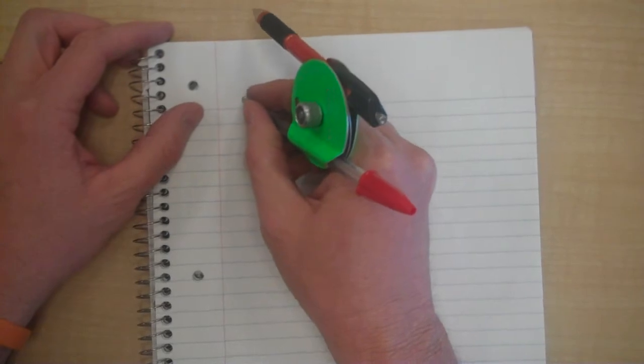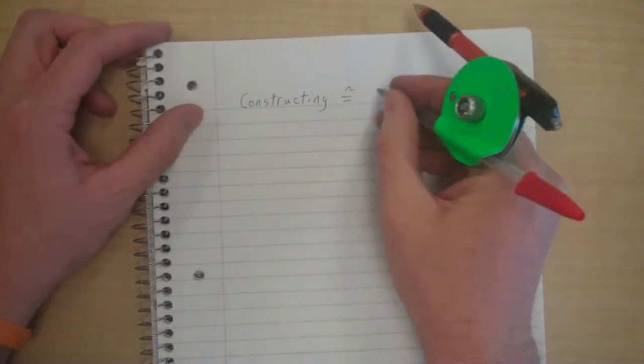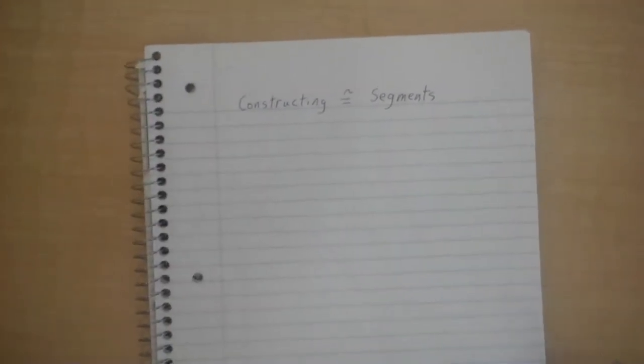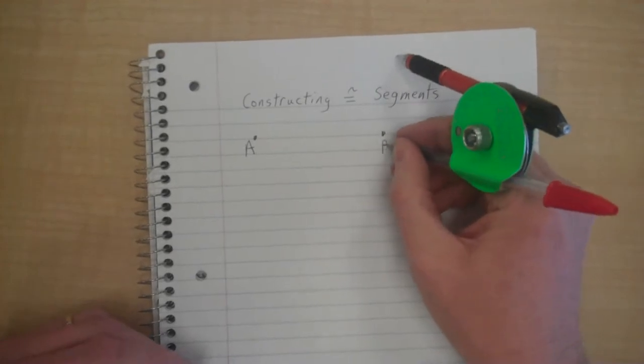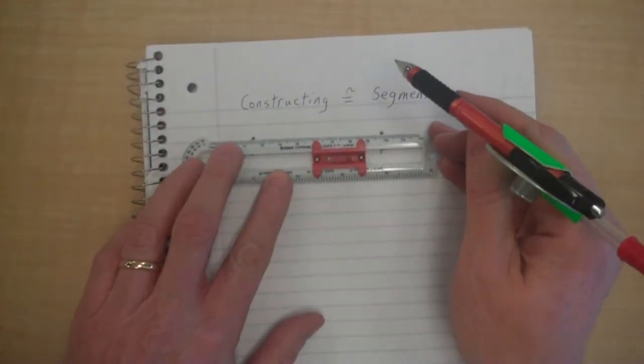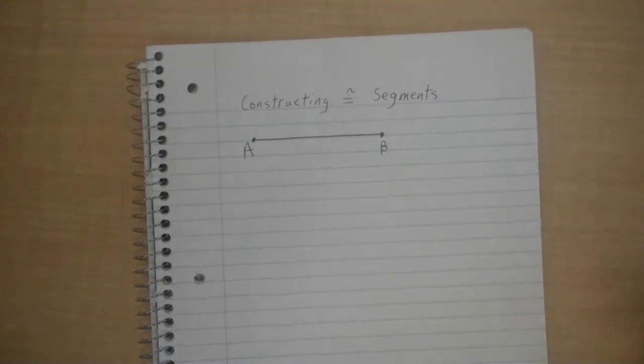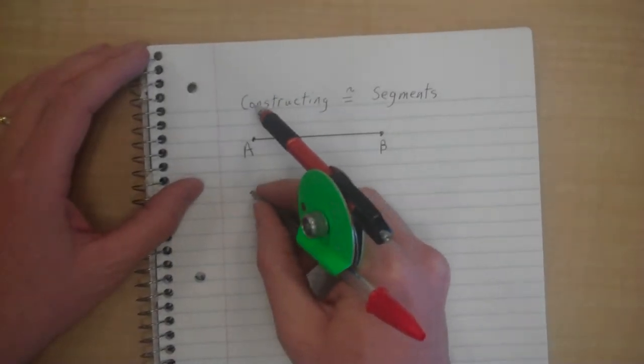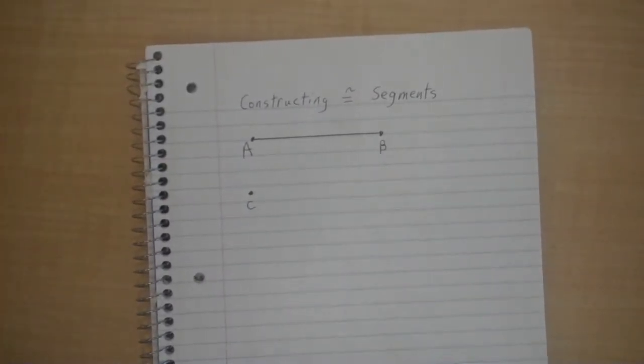What I want you to start with is constructing congruent segments. Let's just make a segment. Let's call it segment AB of some length. Now, in order to construct a segment that is congruent to segment AB, I'm going to say we're going to call it segment CD. I'll put point C right here.